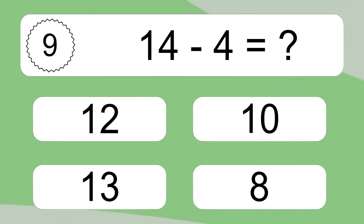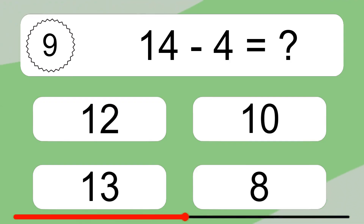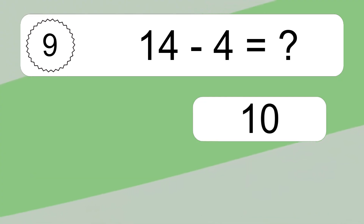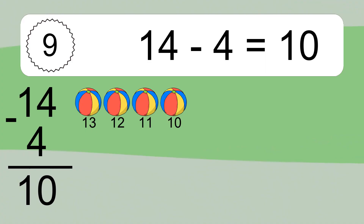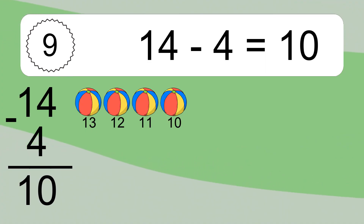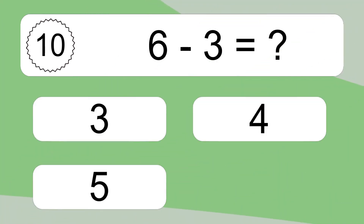14 minus 4 equals what? 14 minus 4 equals 10. Let's count it: 13, 12, 11, 10.